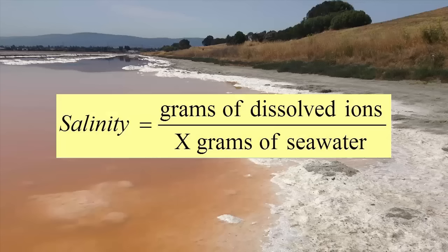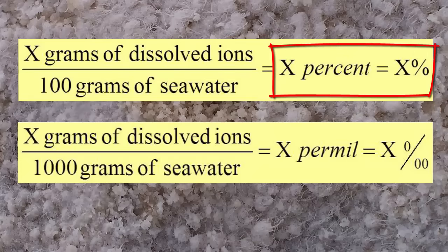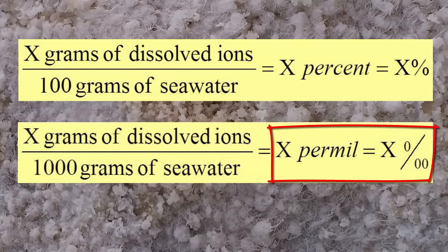Salinity is a ratio of the total number of grams of dissolved ions present in a set number of grams of seawater. If we measured the number of grams of dissolved ions per 100 grams of seawater, the ratio would be parts per hundred, or a percent. For seawater, we typically measure salinity as a number of grams per thousand grams of seawater. That makes it parts per thousand, or per mil.